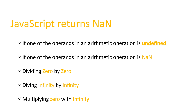JavaScript returns NaN if you perform one of the following operations: if one of the operands in an arithmetic operation is NaN, you get result NaN. If one of the operands is undefined, you get NaN. Dividing 0 by 0, dividing infinity by infinity, or multiplying 0 with infinity also returns NaN. Let us see how we first get a NaN value in JavaScript, and then find how to check a value for NaN.